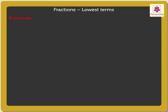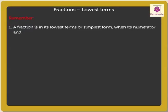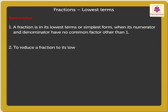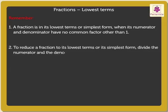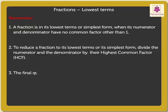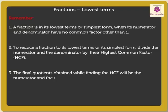Kids, remember: 1. A fraction is in its lowest terms or simplest form when its numerator and denominator have no common factor other than 1. 2. To reduce a fraction to its lowest terms or its simplest form, divide the numerator and the denominator by their highest common factor or HCF. 3. The final quotients obtained while finding the HCF will be the numerator and the denominator of the simplest form of the given fraction.